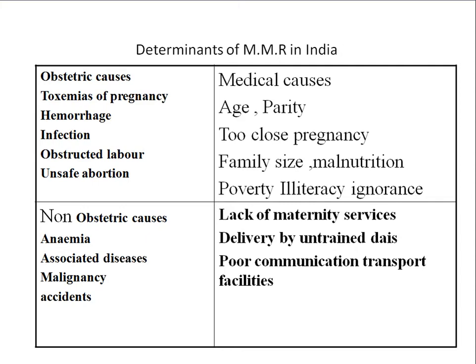Regarding medical causes: maternal deaths are more frequent when the mother is too young — less than 15 years — or too old — more than 30 to 40 years. High parity — more than two pregnancies — and short birth spacing of less than two years also increase the risk of maternal death.